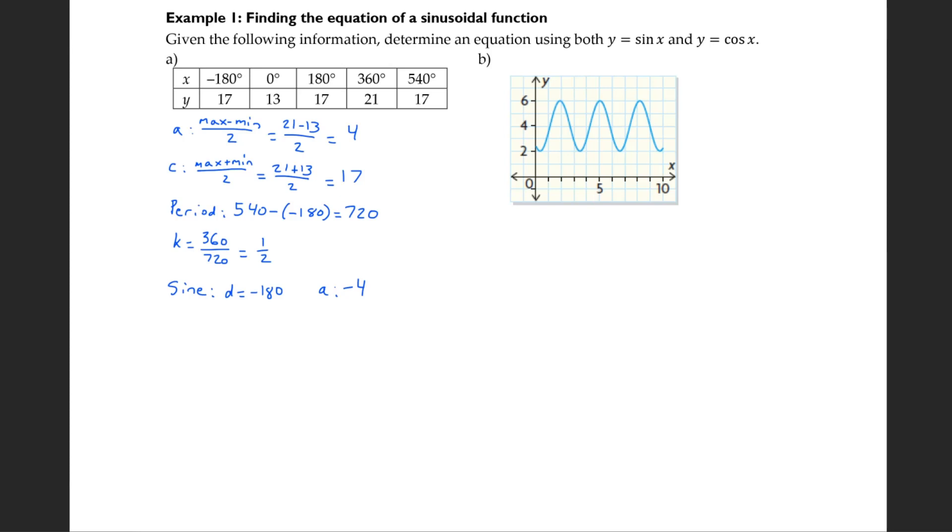If you wanted to, you could have said I'm going to use positive 180 for d, because periodic, it'll work. If you used positive 180, you see the next point is the maximum, which means a would have stayed positive. So you could have used that.